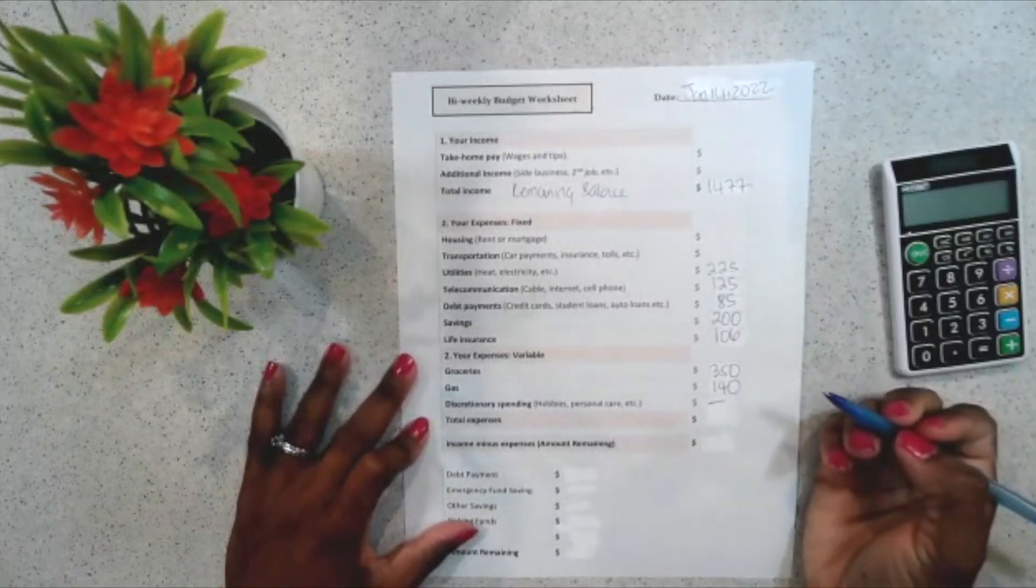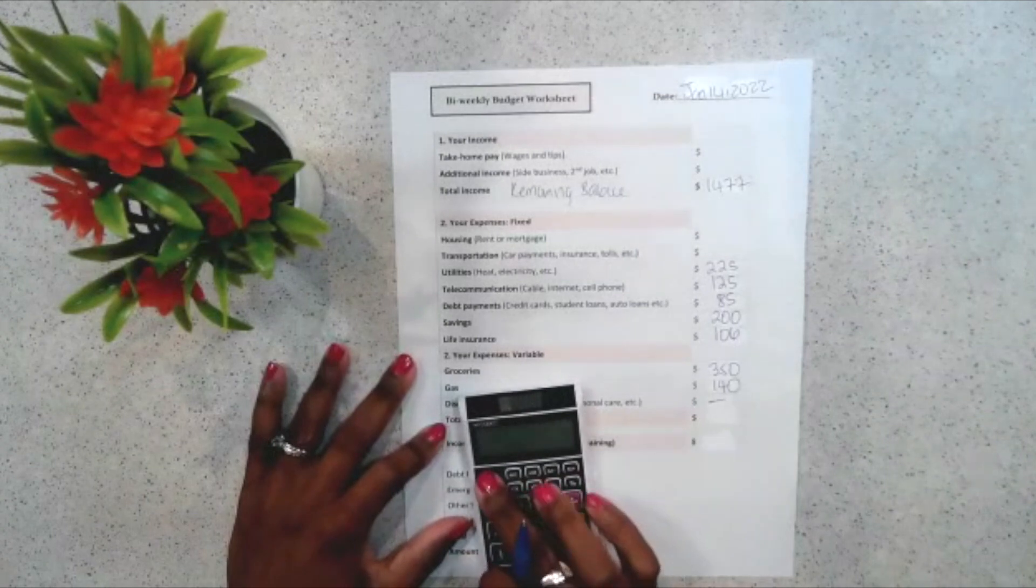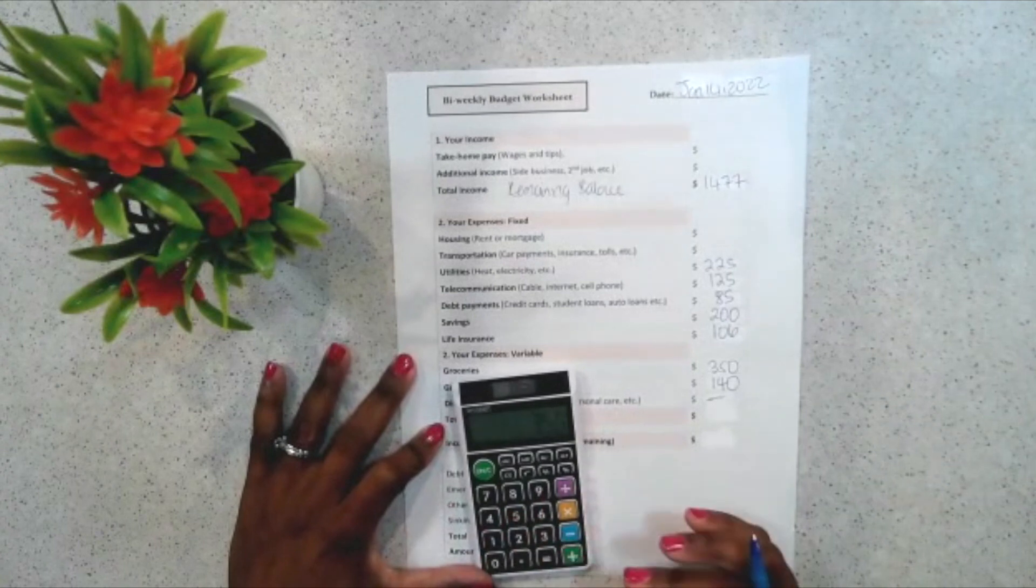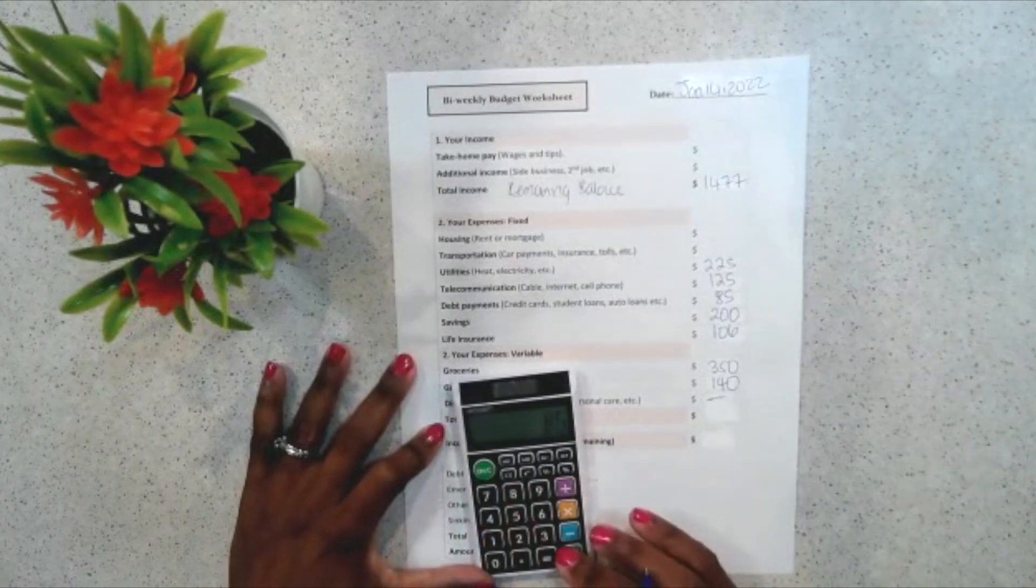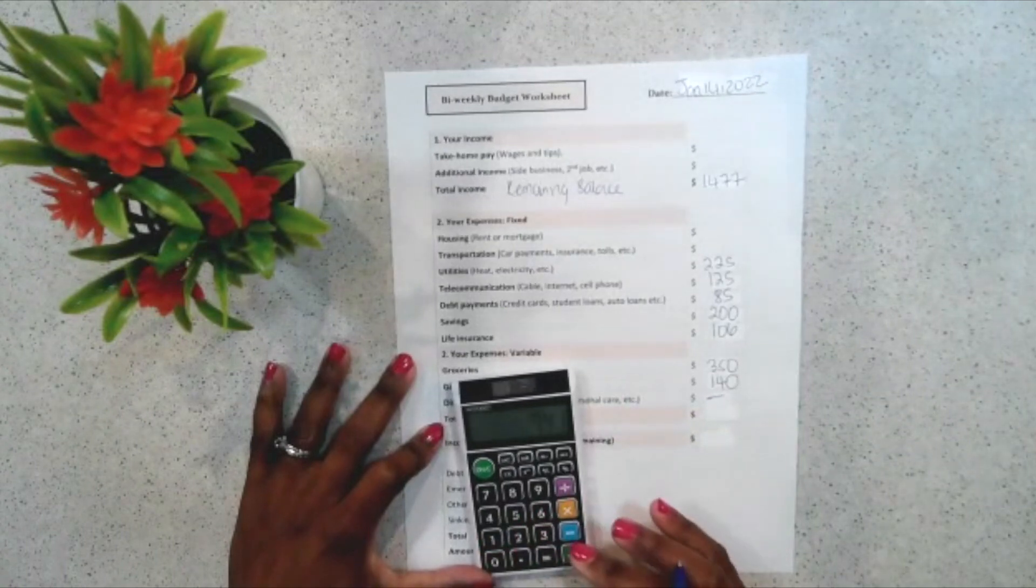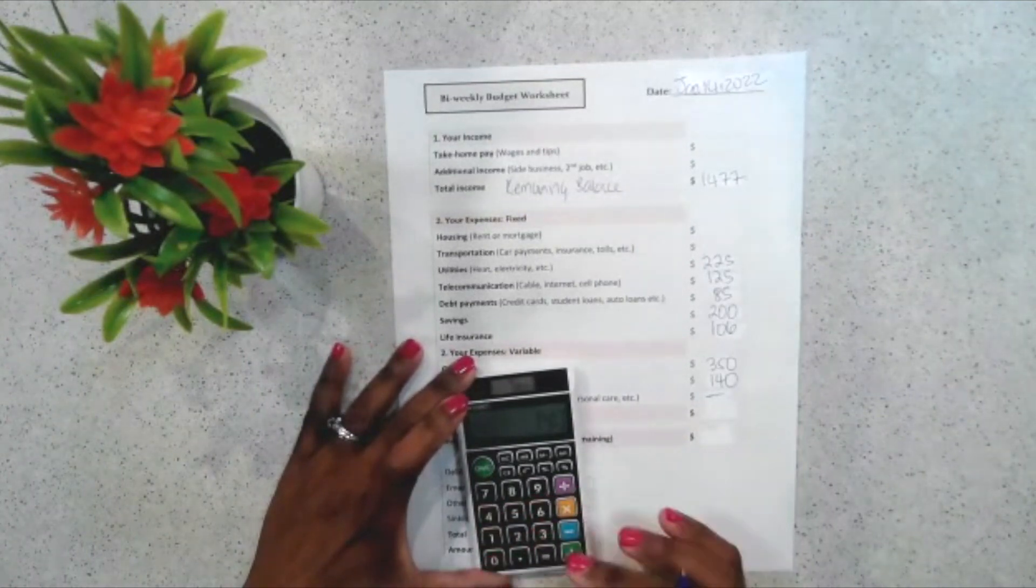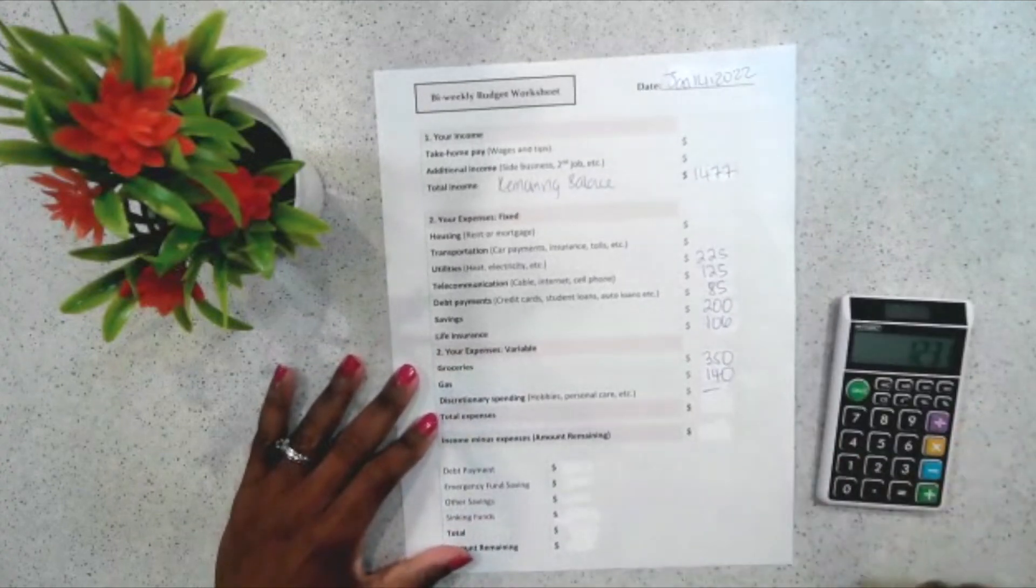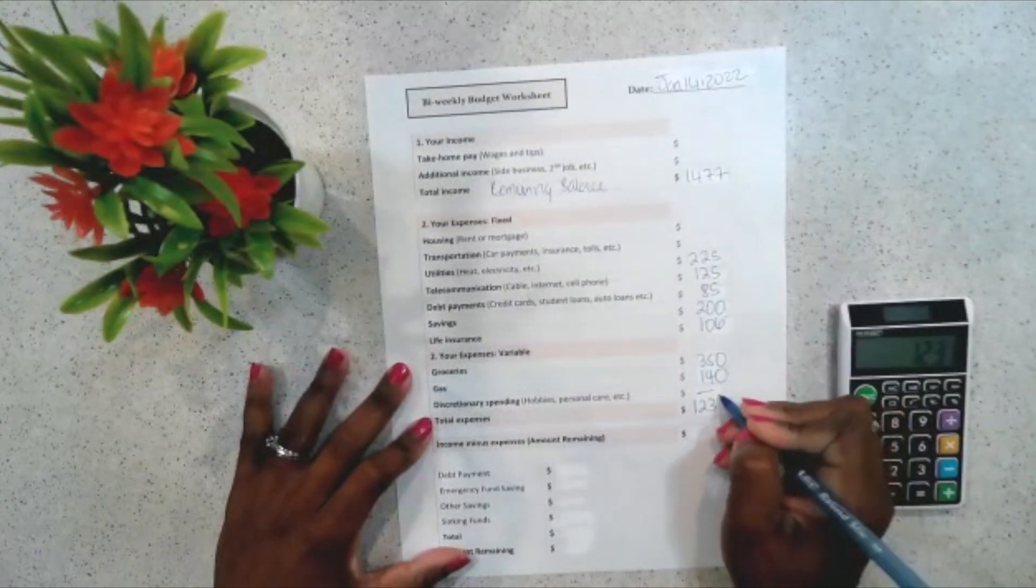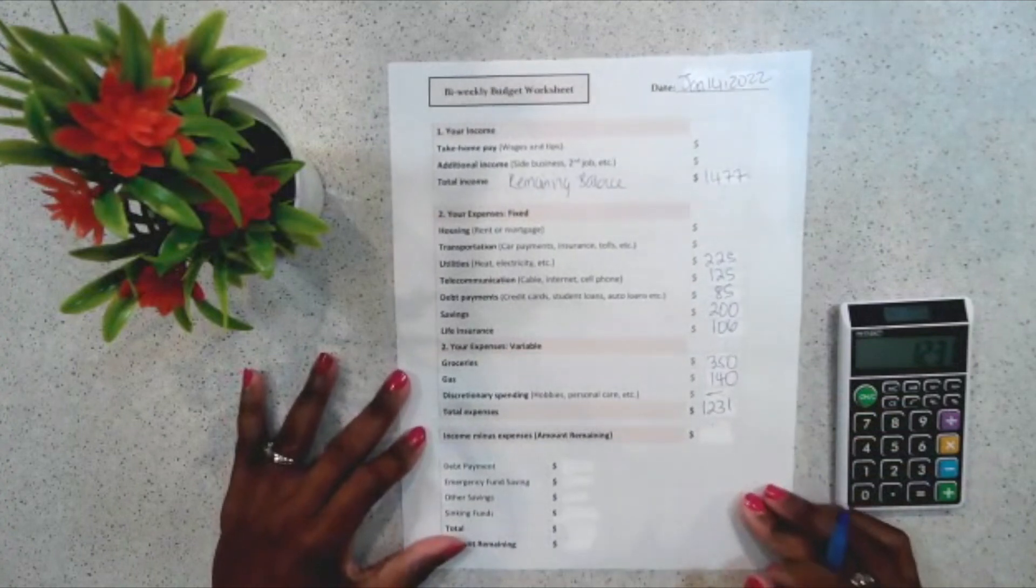So, at this point, I am now going to add all my expenses to get my total. So, I'm adding these up now. So, my total expense is $1,231. And this takes us to step three, which is where I'm going to subtract my expense from my income.